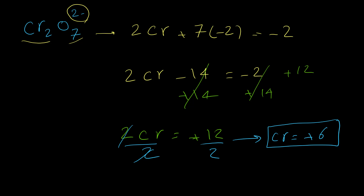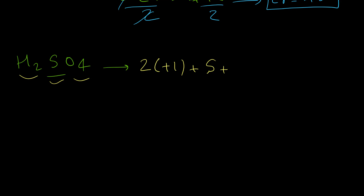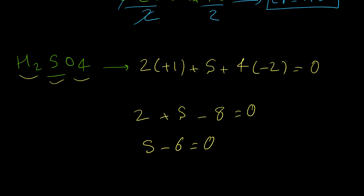Chromium has a coefficient of 2 because there are 2 chromium atoms in the formula. For the last example, let's find the oxidation number of sulfur in sulfuric acid, H2SO4. There are 3 different atoms: 2 hydrogen at +1 each, sulfur unknown, and 4 oxygen at -2 each. The molecule has no charge, so the total is 0. So 2 + S + (4 × -2) = 0, meaning S - 6 = 0. Therefore, sulfur's oxidation number is +6.